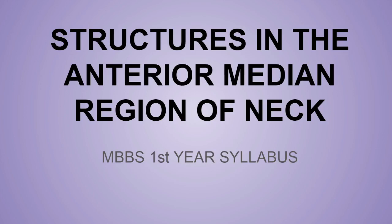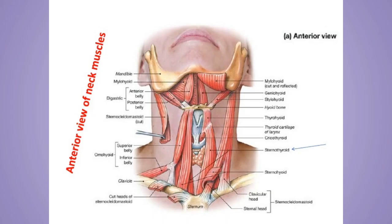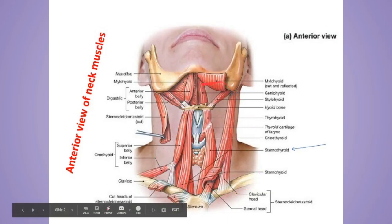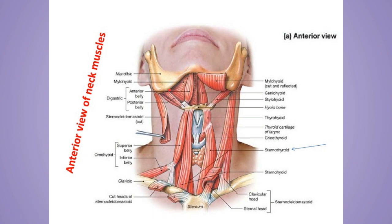Hello everyone, today we will discuss the structures in the anterior median region of the neck. This is the anterior median view of the neck. For ease and convenience, let's discuss some of the main important muscles and bone locations in the anterior median region of the neck, so it will be easier to go into further detail.